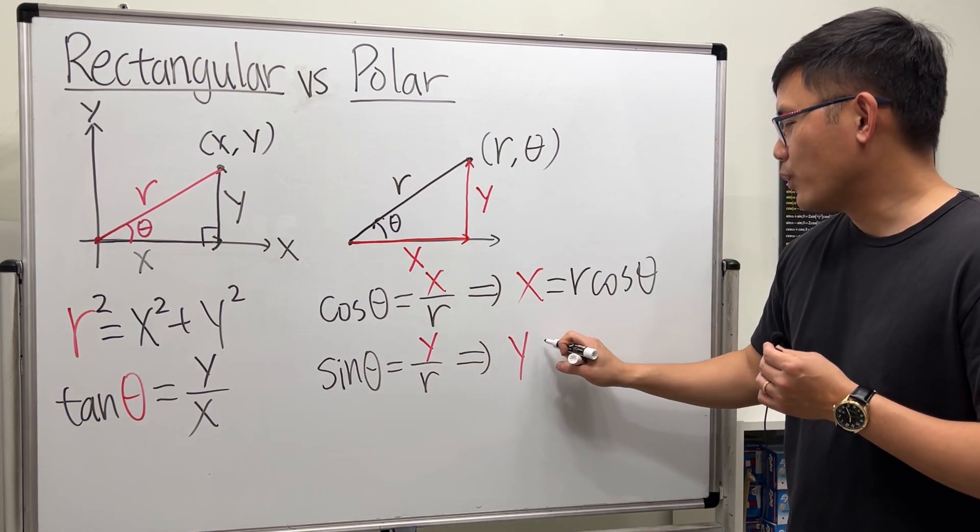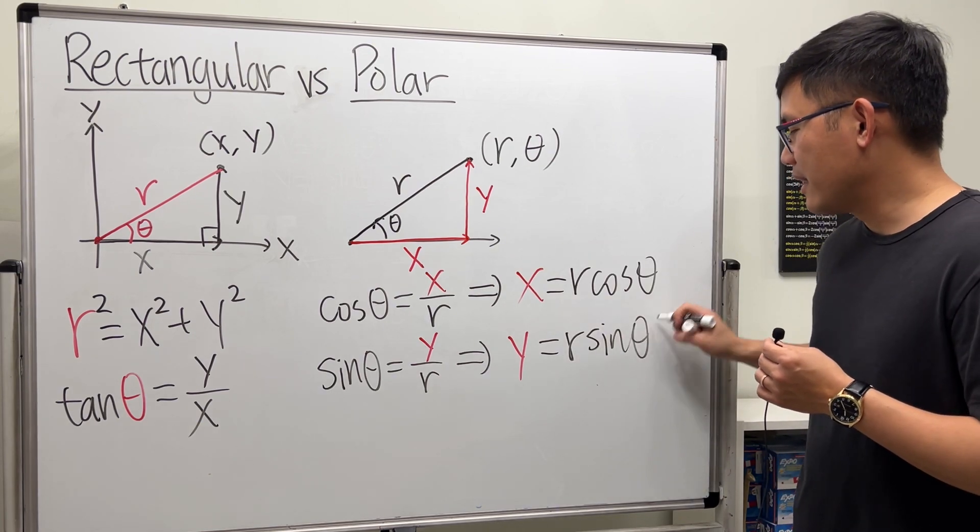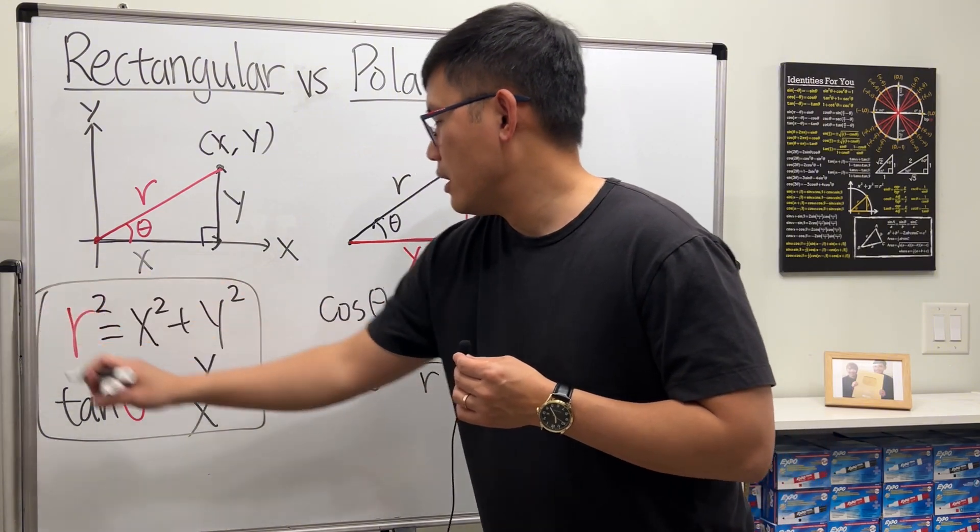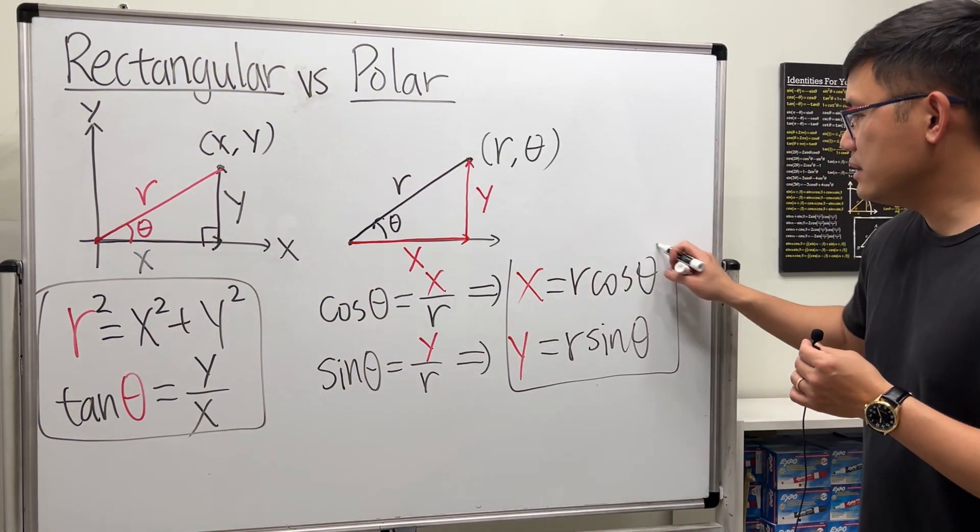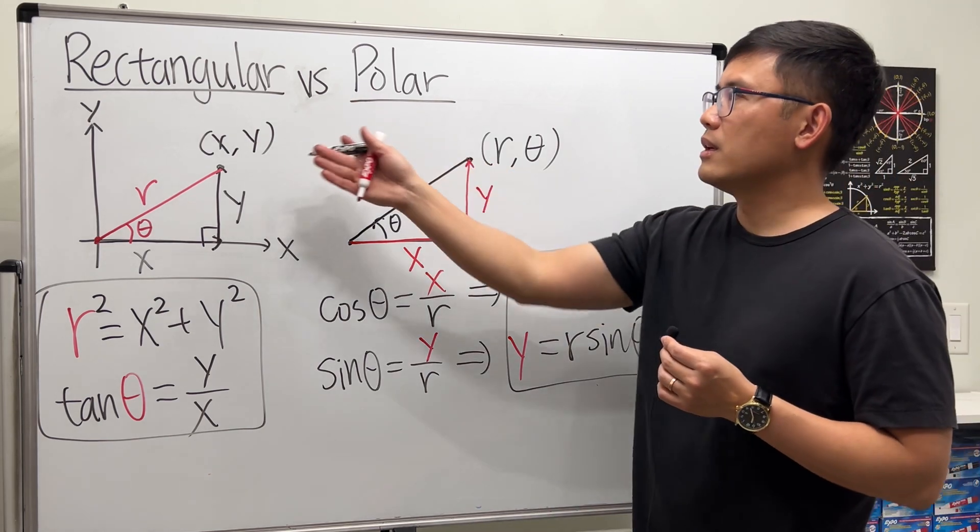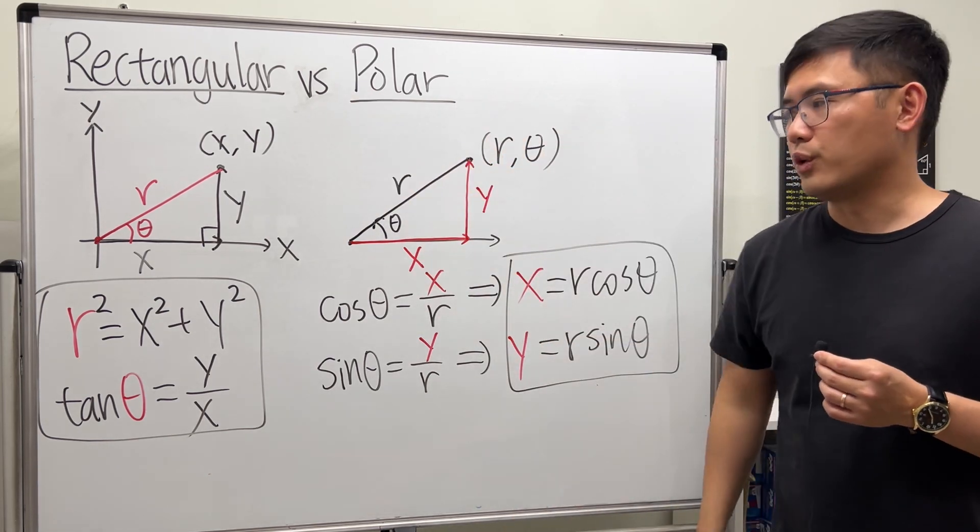We get y equals r times sine theta (y = r sin θ). So these four are the most important equations for converting rectangular to polar or the other way around.